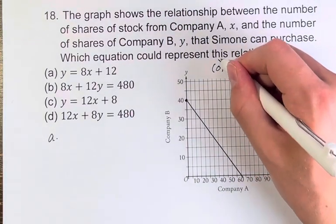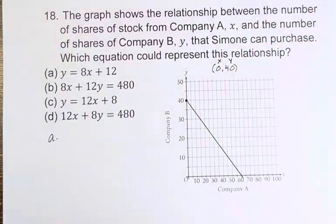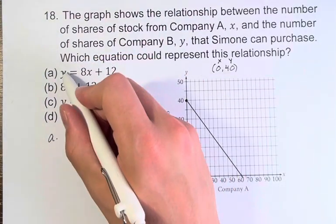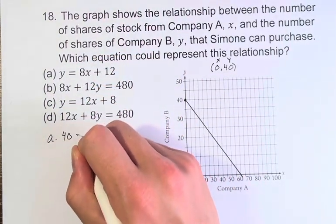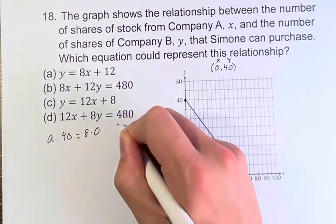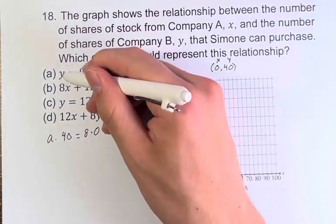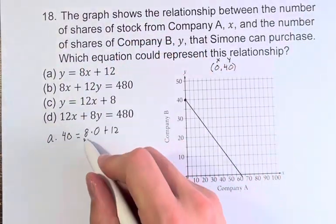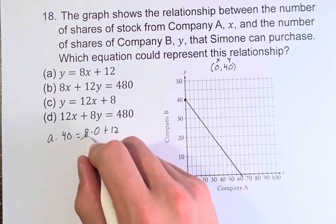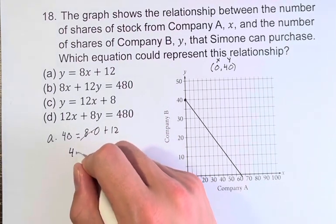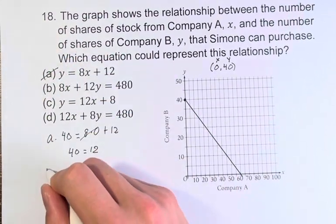So in this case x is 0 and y is 40. Plugging this into A we get 40 is equal to 8 times 0 plus 12. Again we're plugging in 40 for y and 0 for x. 8 times 0 is just 0 so this just disappears and we get 40 is equal to 12. Therefore we know it's not A.